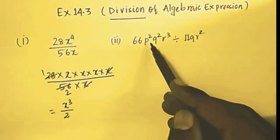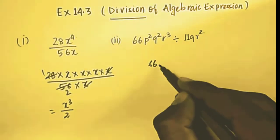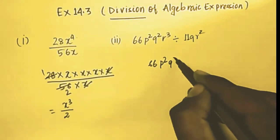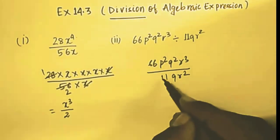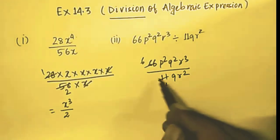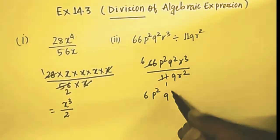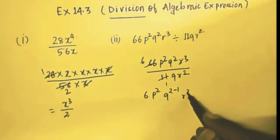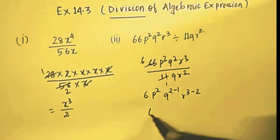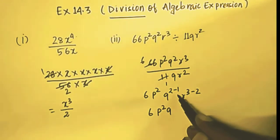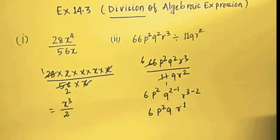The second question is 66p²q²r³ divided by 11qr². So 11 simplifies with 66 to give 6, and then p² stays. For q: 2 minus 1 gives q¹, and for r: 3 minus 2 gives r¹. So the answer is 6p²qr.